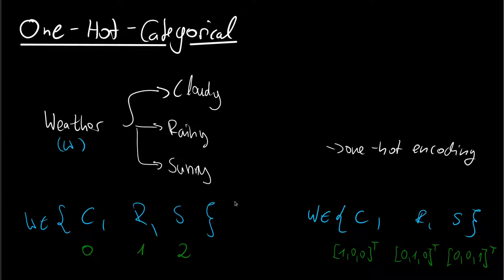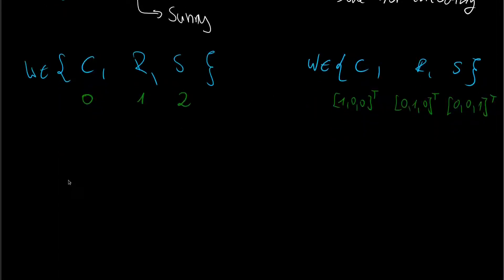So in the intro we already saw that we changed from an encoding with integers to an encoding with a one-hot vector. So let's note this down. We use an encoding as a one-hot vector. And this has one important implication.